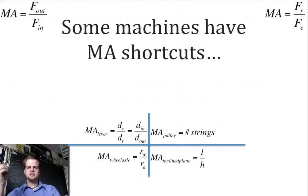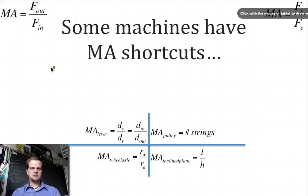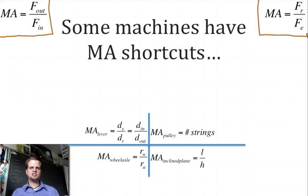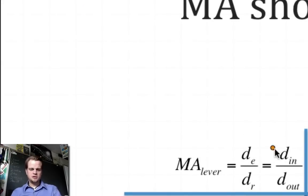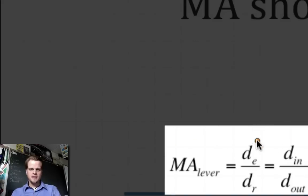Some machines have shortcuts for calculating mechanical advantage, and that's where we'll spend some time. The force out over force in formula works for all machines, but not all problems will tell you the forces directly — some just show you the machine. So let's go one by one. For the lever, the mechanical advantage equals the effort distance divided by the resistance distance, which is the same as input distance divided by output distance.